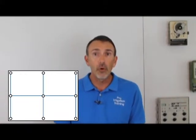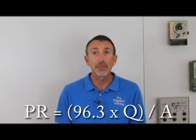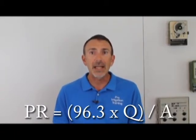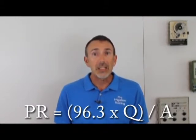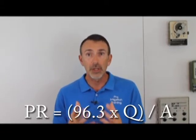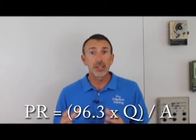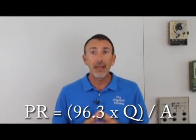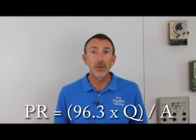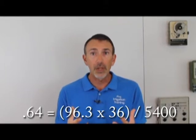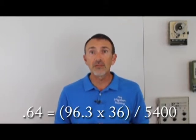We're going to look at our formula, and this formula comes from the Irrigation Association. The formula is PR, our precipitation rate, equals 96.3 times Q divided by A. The 96.3 is a conversion factor that gets us to our desired inches per hour. The Q is the total flow through that zone, 36 gallons per minute, and the A is the total area we're irrigating, 5,400 square feet. So if we go through this formula, we get .64 inches per hour.